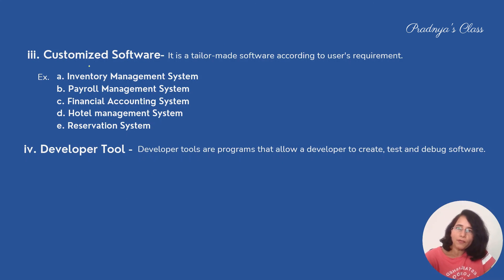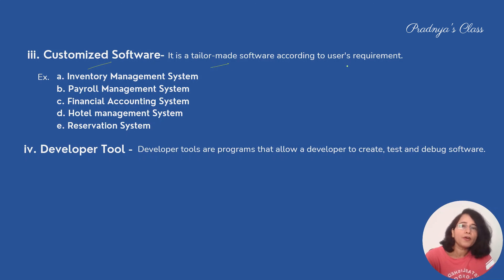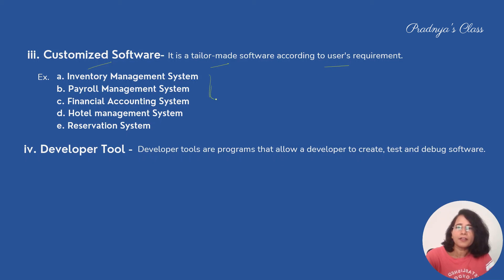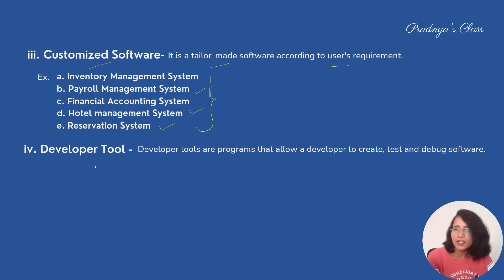The next category is customized software — tailor-made programs to perform specific tasks according to user requirements. Examples include a hotel management system and a payroll management system. The last category is developer tools, which are used to create, test, and debug software.